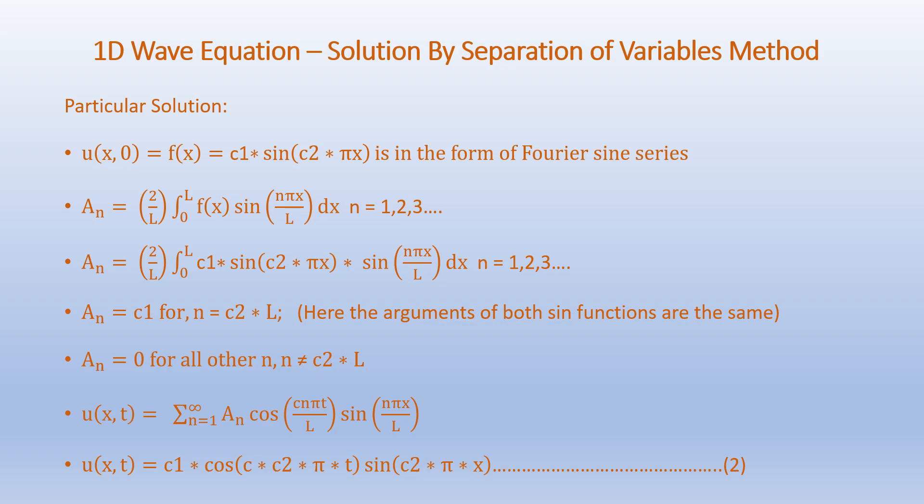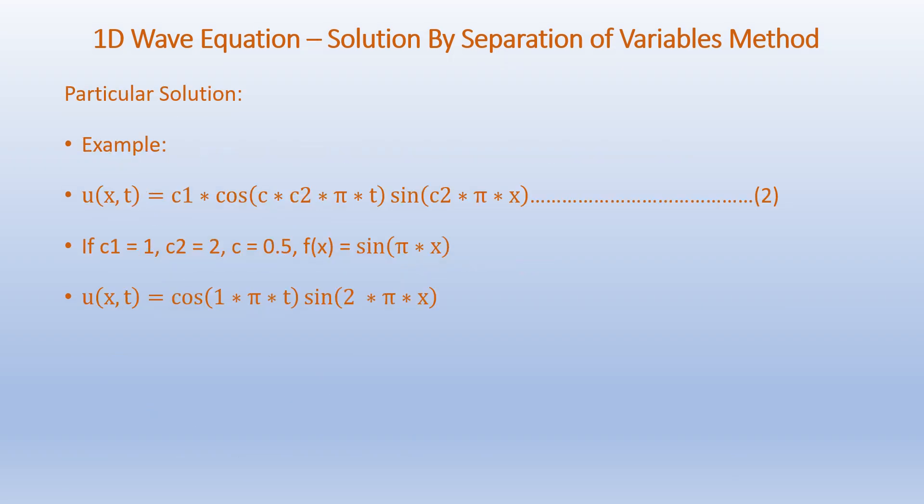When n equals C2 times L, An becomes C1 because the arguments of both sine functions are the same — you can mathematically verify this. Also, An equals 0 for all other n's where n is not equal to C2 times L. Accordingly, U of X comma T equals the sum from n equals 1 to infinity of An·cos(CnπT/L)·sin(nπX/L). This equation becomes U of X comma T equals C1·cos(C·C2·π·T)·sin(C2·π·X).